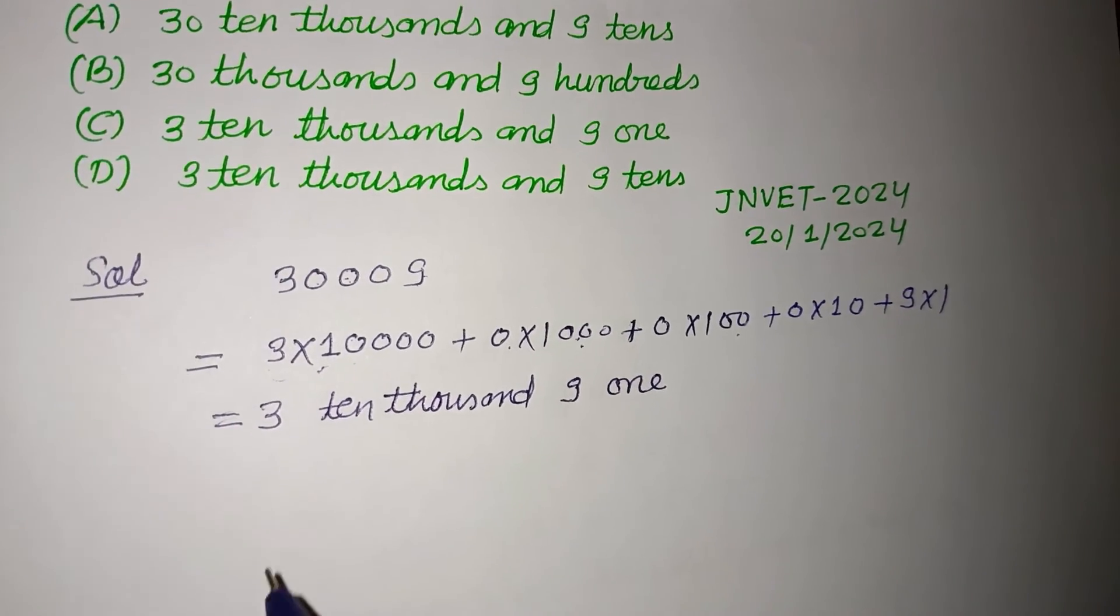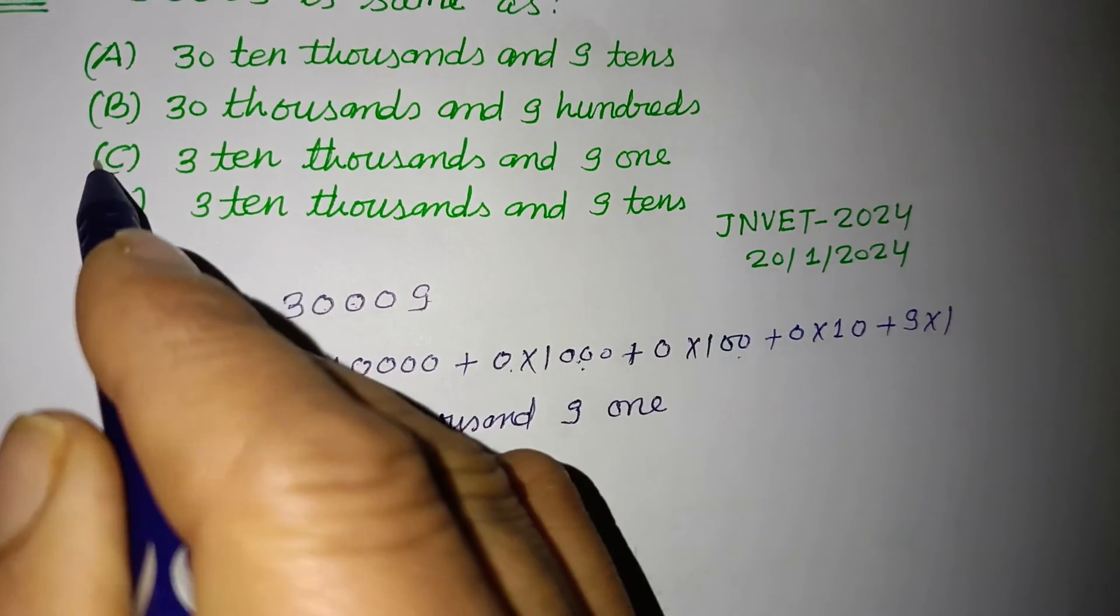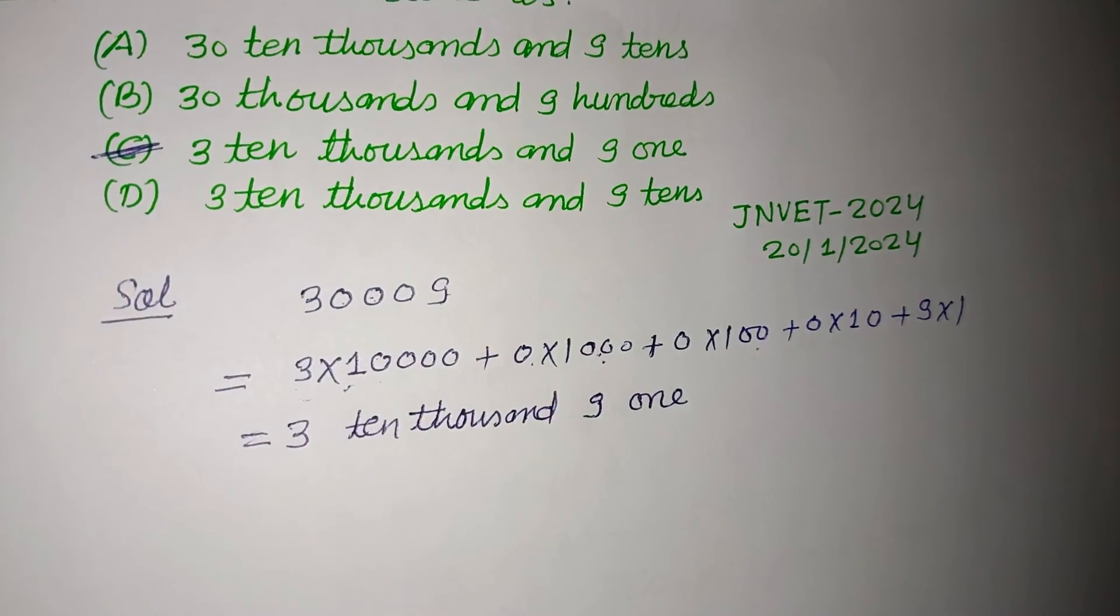So answer is 3 ten thousand 9 one, which is found in option C. Therefore, option C is correct.